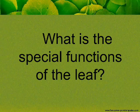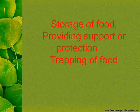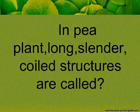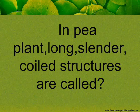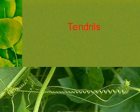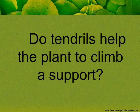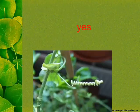What are the special functions of the leaf? Special functions include storage of food, providing support or protection, and trapping of food. In pea plants, long, slender, coiled structures are called tendrils. Do tendrils help the plant to climb a support? Yes.